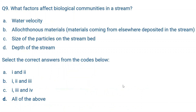Question number nine: What factors affect biological communities in a stream? The factors listed are: A. Velocity of water — yes. B. Allochthonous materials, meaning materials coming from elsewhere and deposited in the stream — yes. C. Size of particles on the stream bed — yes. D. Depth of stream — yes. So the correct answer is D, all of them.